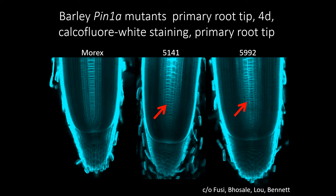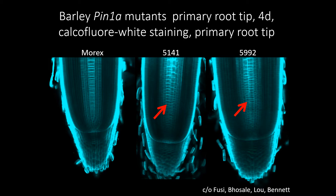Last but not least, we're also looking for mutants in root angle. We have this interesting one we called Enhanced Gravitropic 2, with a very different root angle as compared to Morex, as you can see.